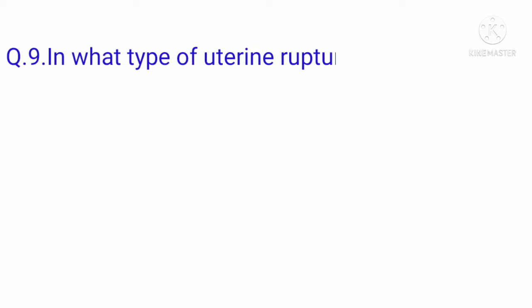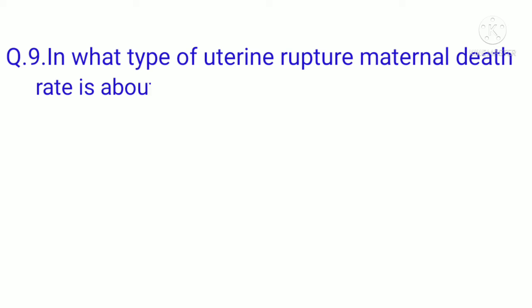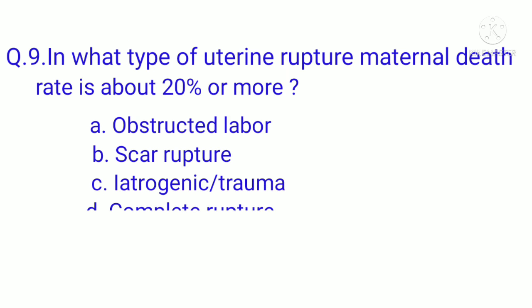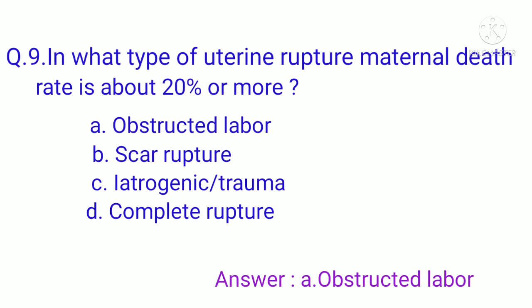Question 9: In what type of uterine rupture is the maternal death rate above 20 percent? Option A: obstructed labor — spontaneous or instrumentation, Option B: scar rupture, Option C: iatrogenic or traumatic, Option D: complete rupture. The correct option is A, obstructed labor — spontaneous or instrumentation.